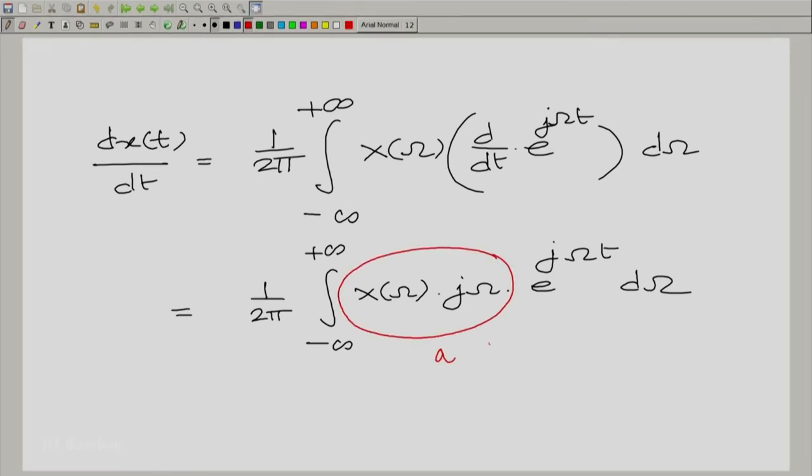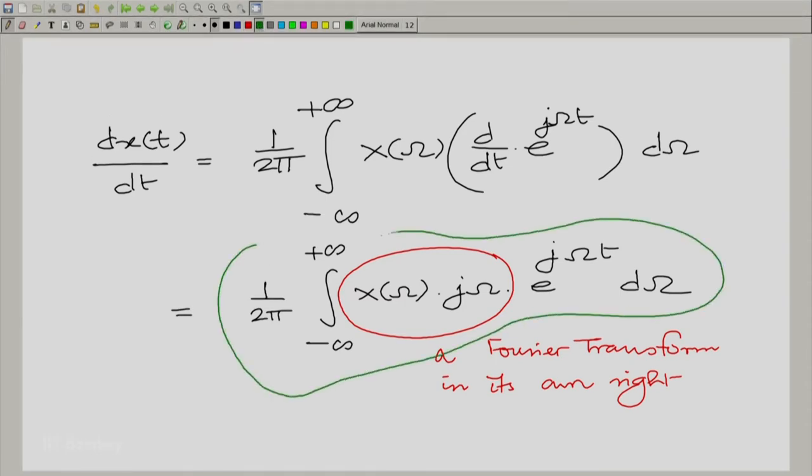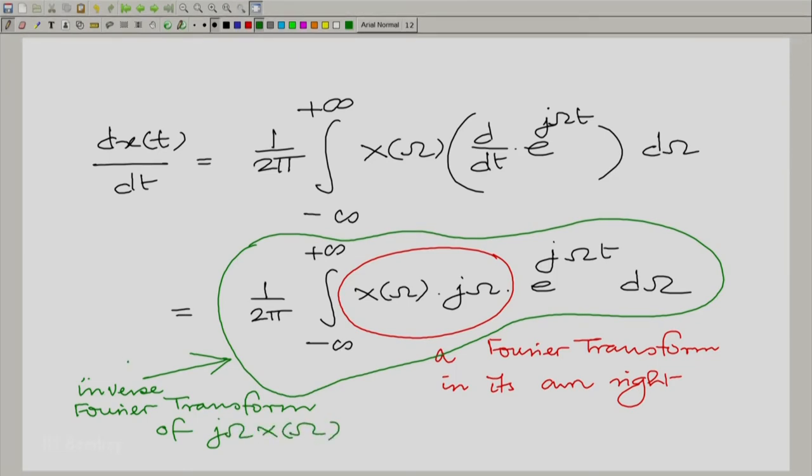Clearly, this is a Fourier transform in its own right. And if you look at this whole expression here, which I am marking now in green, this whole thing is the inverse Fourier transform of that quantity. And clearly, since there is an equation here must be equal to this and therefore, what we are saying is that what we have underlined in red here is really the Fourier transform of dx(t)/dt.